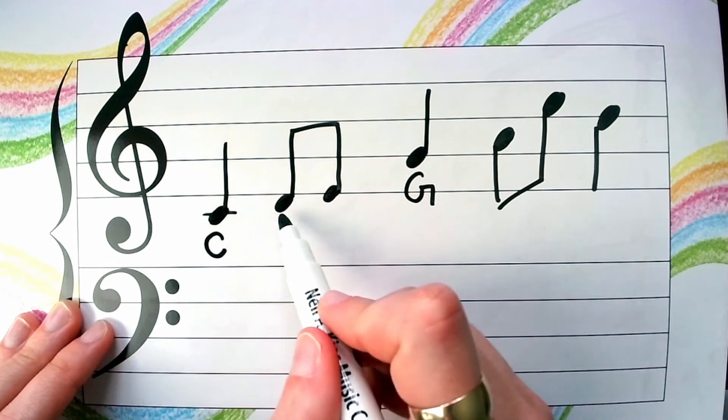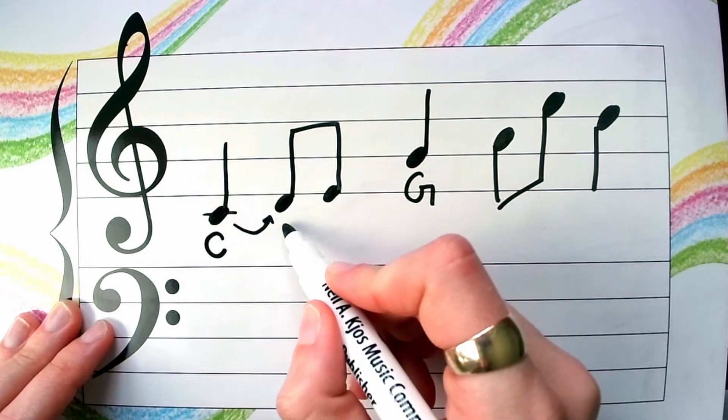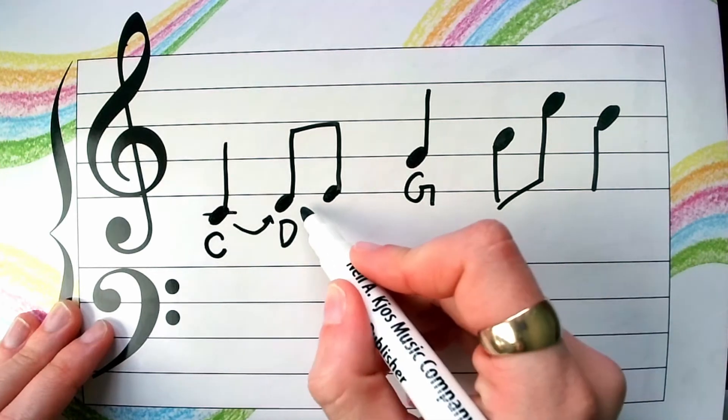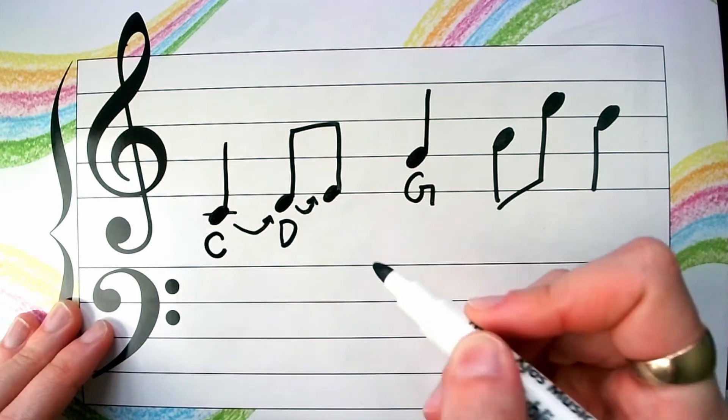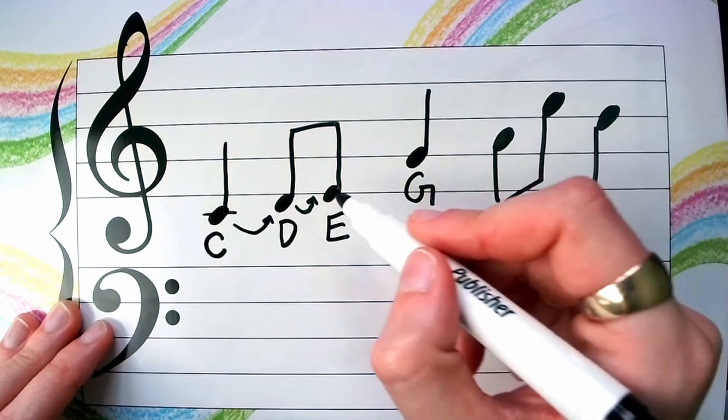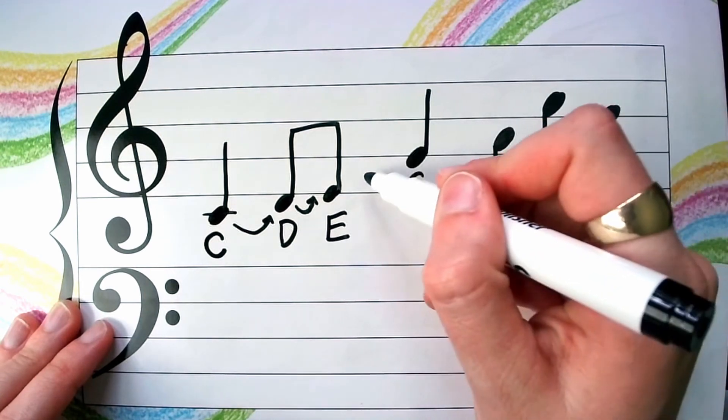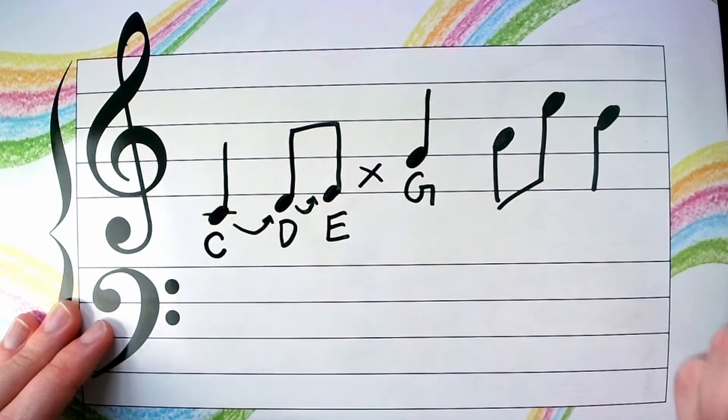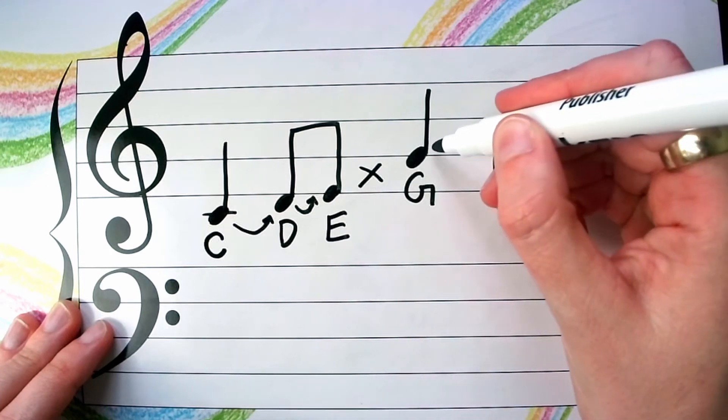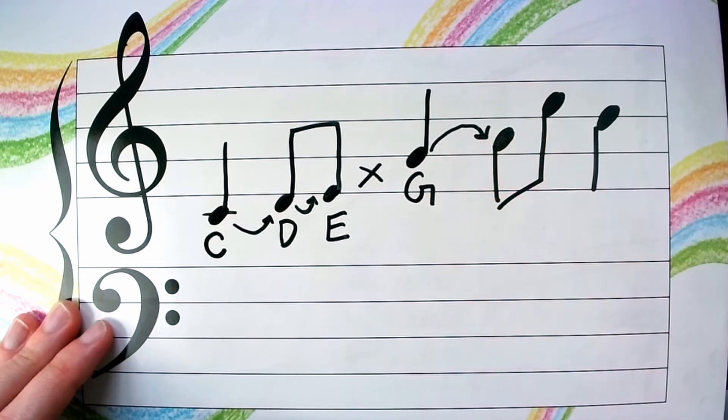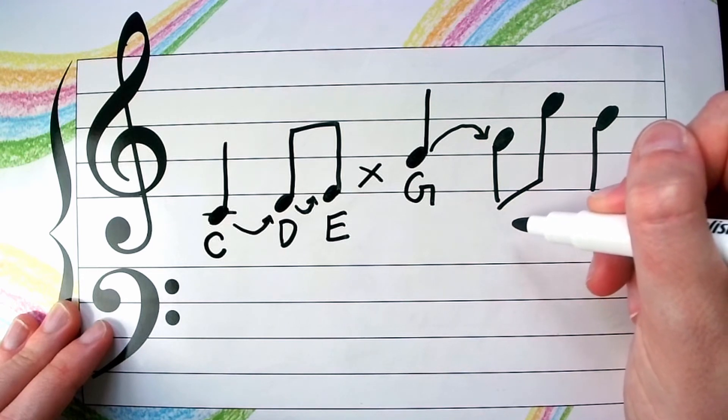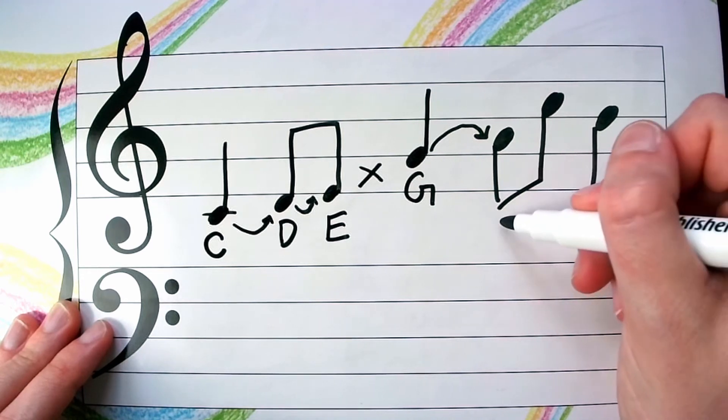Now, we're going from a line to a space. So this is up one step. So remember how I said if you go up, you go forward in the alphabet. So this becomes D. We have one more step, E. Now, we already filled in G, but let's look at how that becomes a skip. See how we're going from line to line? We're skipping over the space, and that's how we got to G. From G, we have a step. So after G, remember G is our last note, our last letter in our musical alphabet. So we need to go back to A.